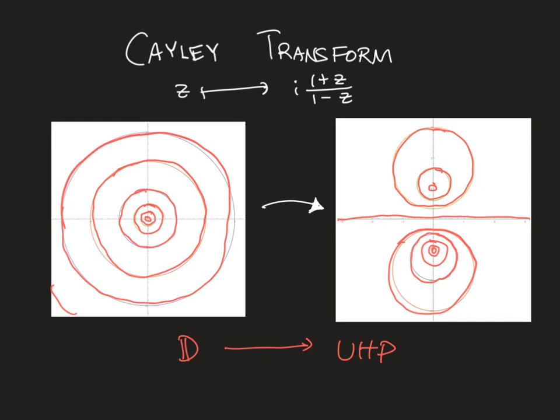One thing to notice is that the bigger and bigger circles, which you could think of as heading to infinity, they tend to minus i, whereas zero maps to i.